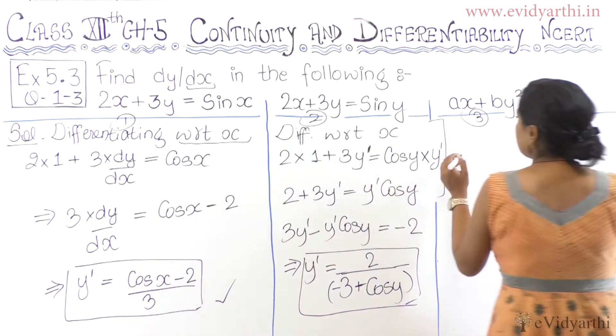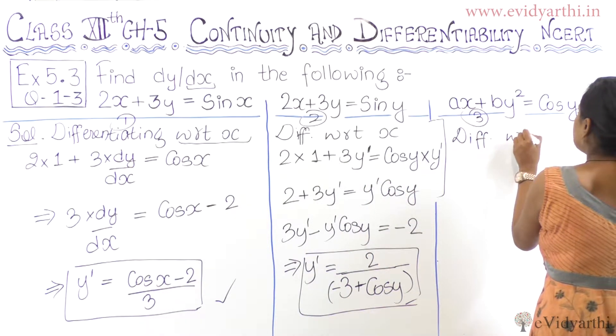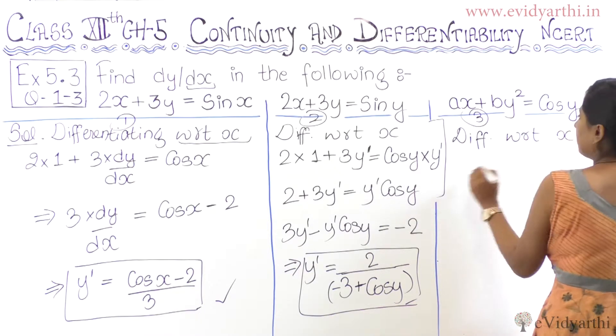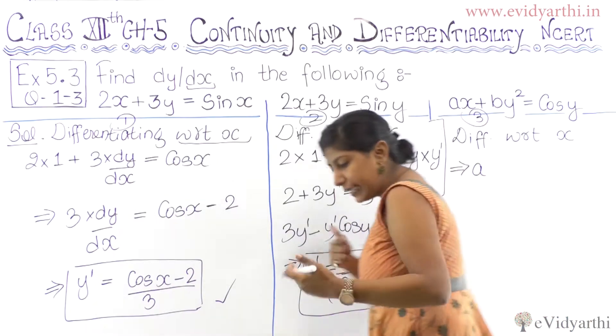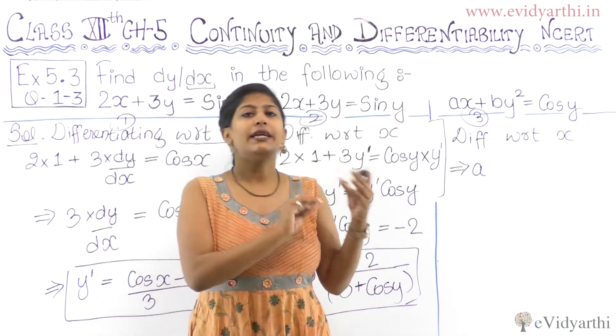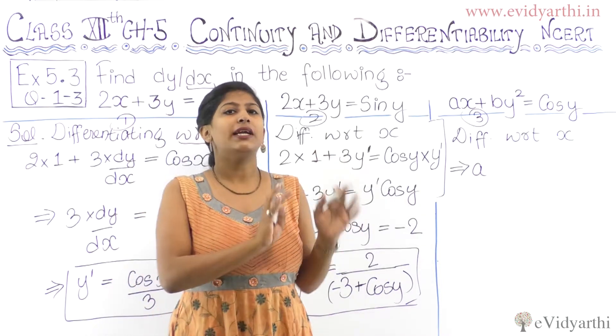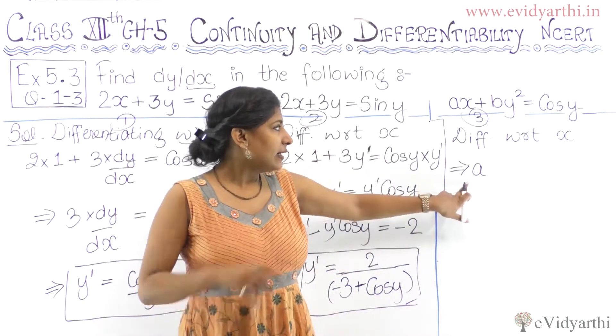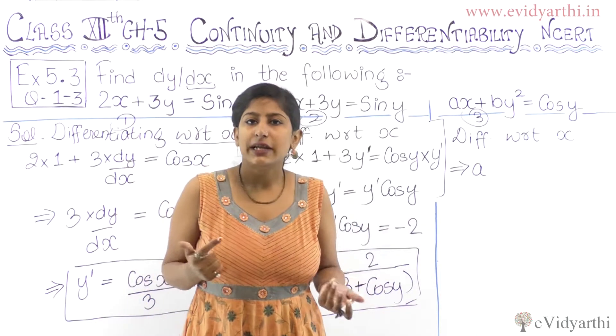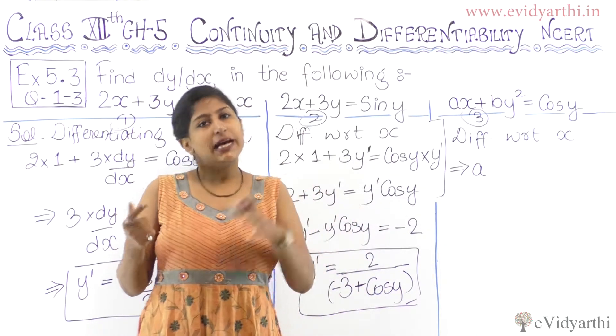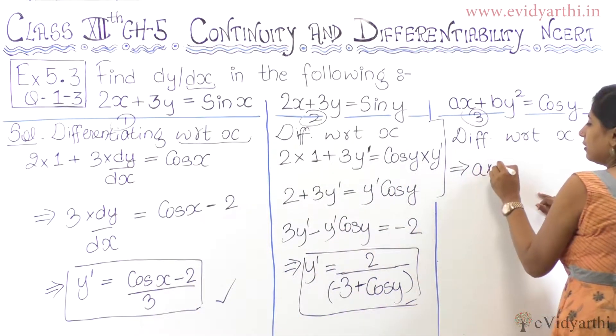The third question quickly, same thing - differentiating with respect to x. A is constant. A times x's derivative. So constant into something's derivative. So a times x's derivative. This is 2x's 2, 3x's 3, 5x's 5, ax's a. Right? So ax's derivative is a, a into 1.